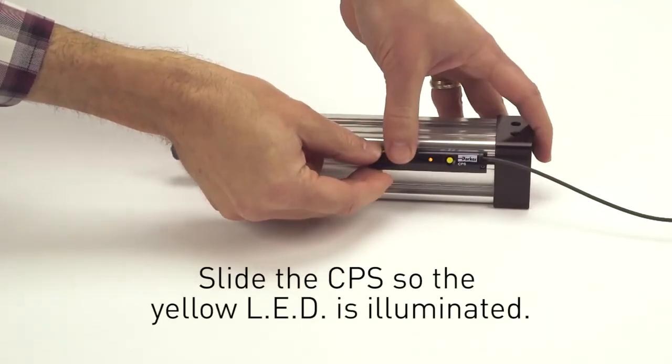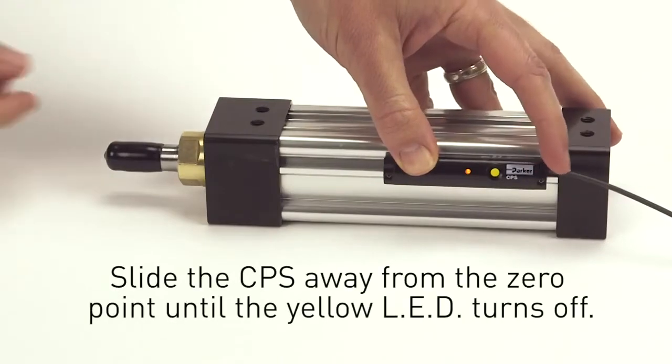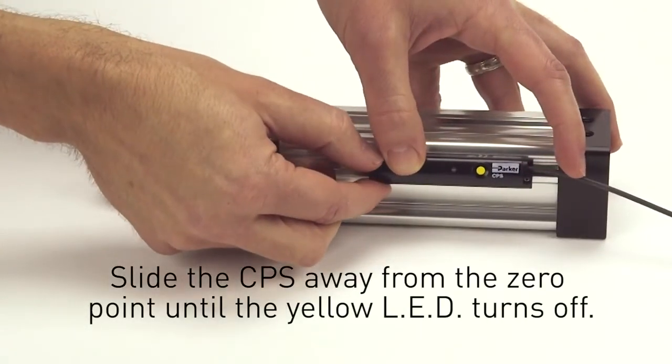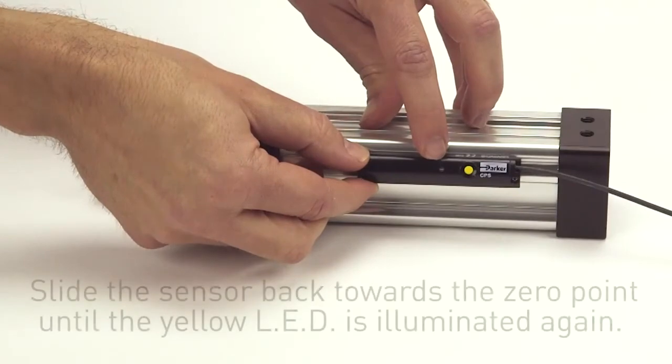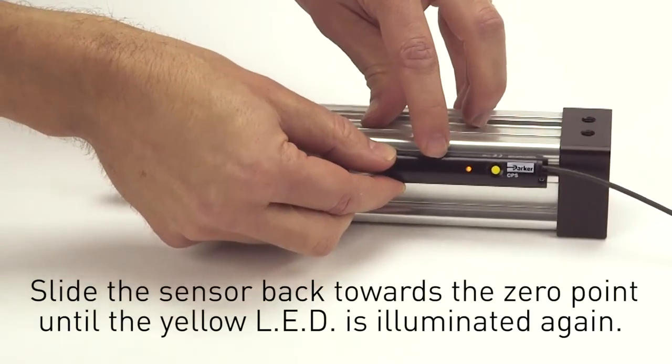Slide the CPS so the yellow LED is illuminated. Now slide the CPS away from the zero point until the yellow LED turns off. Then slide the sensor back towards the zero point until the yellow LED is illuminated again.